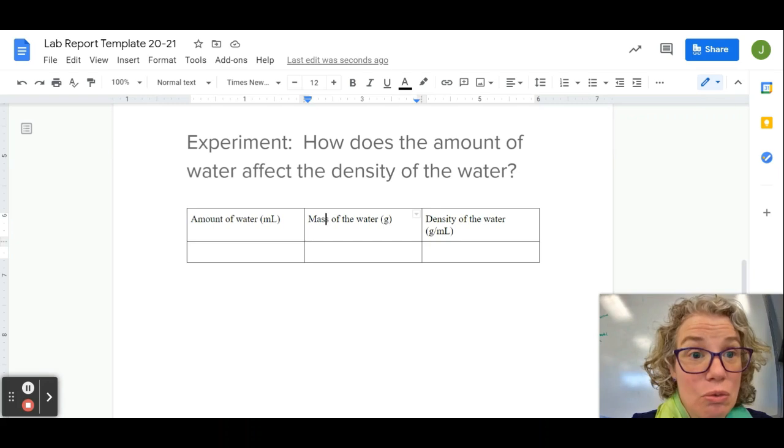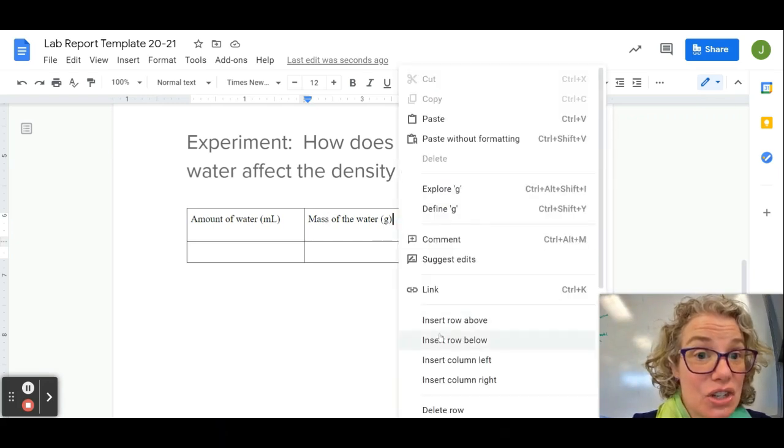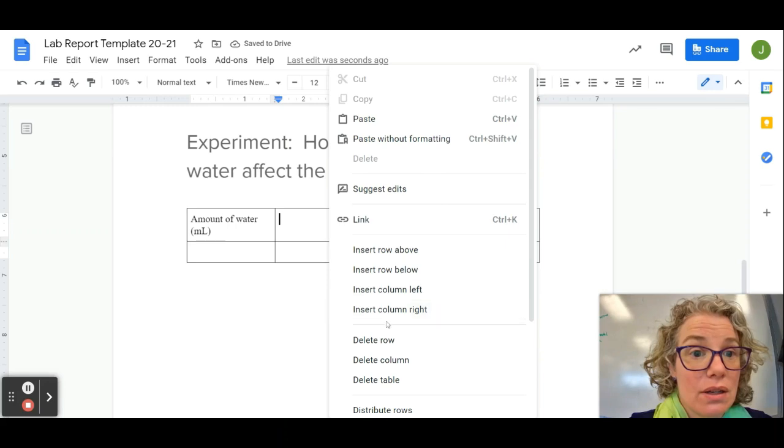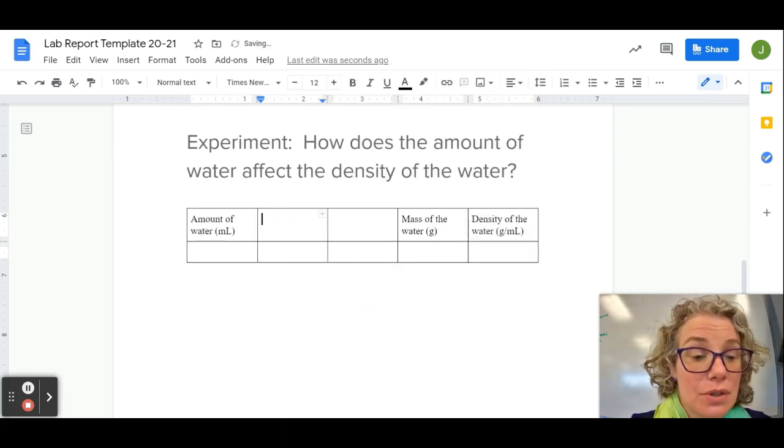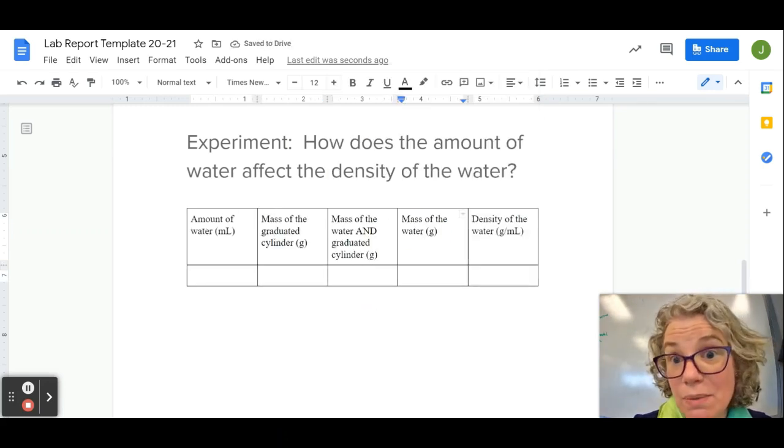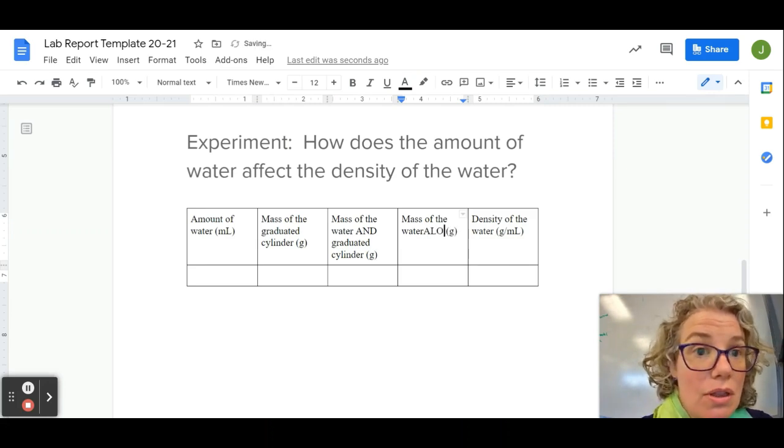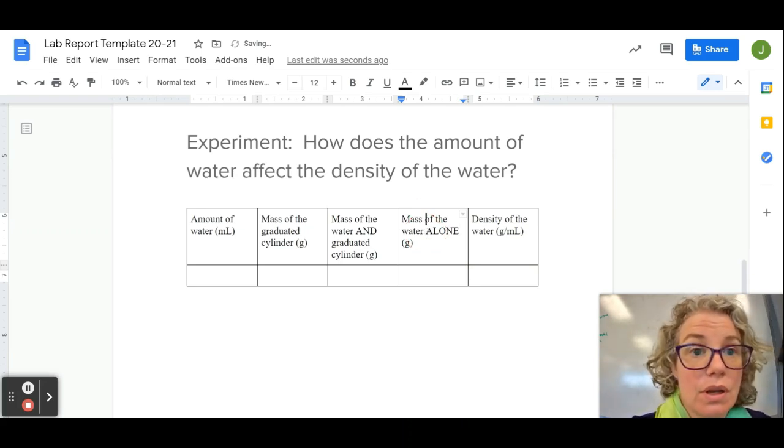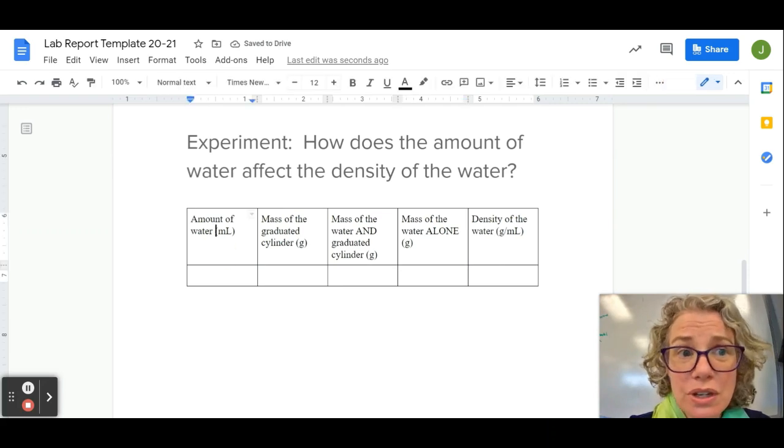I'm going to right click and I'm going to go to Insert. I want columns, insert another column. And then this column is where I would subtract these previous two columns, so this is the mass of the water alone.